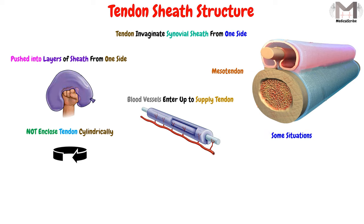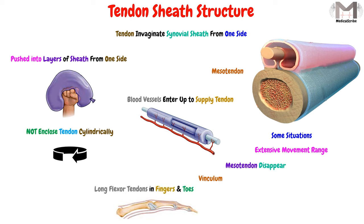In some situations where the range of movement is extensive, the mesotendon will disappear or remain in the form of narrow threads, or the blood vessels will perforate the sheath and raise up a synovial fold. This fold is called the vincula, such as those on the long flexor tendons that exist in the fingers and in the toes.